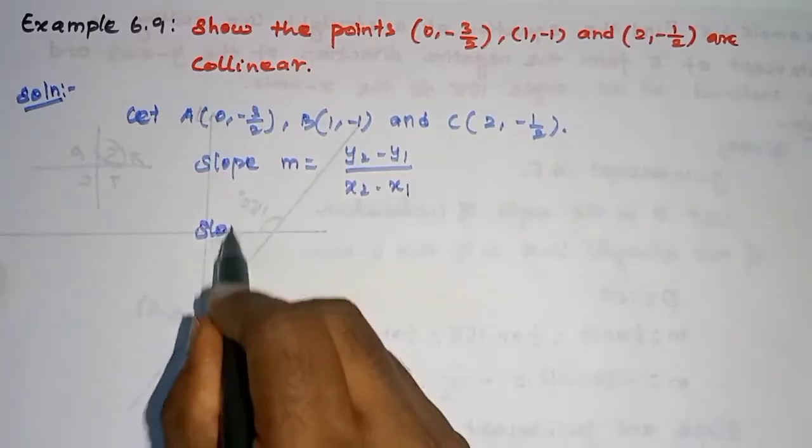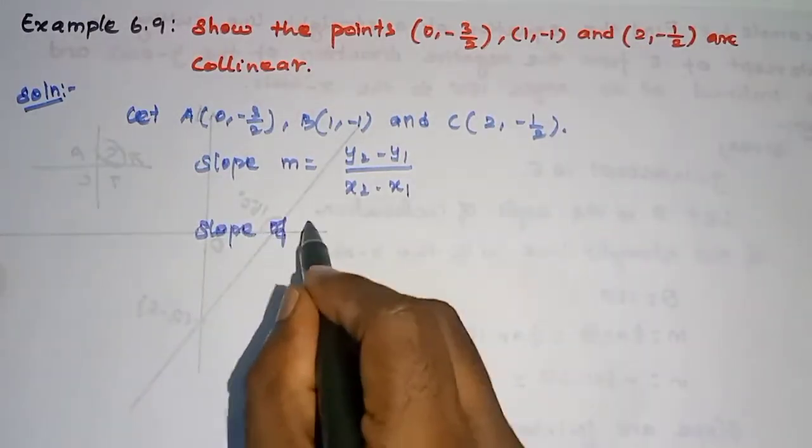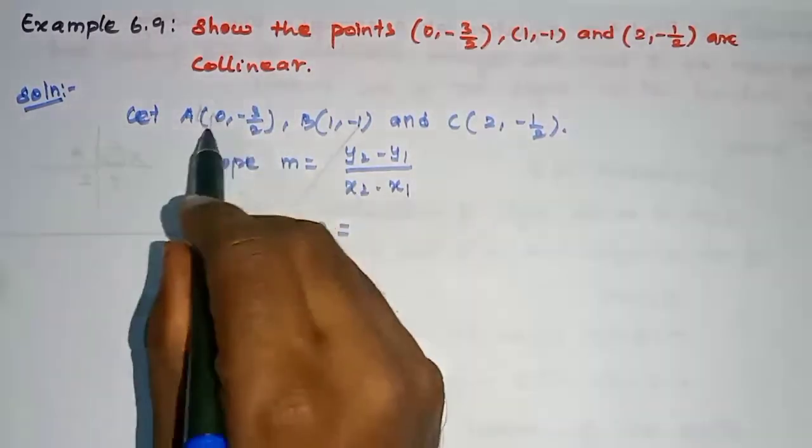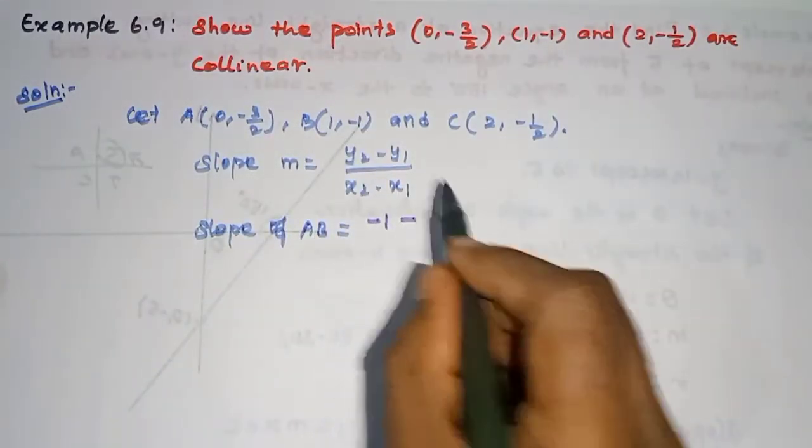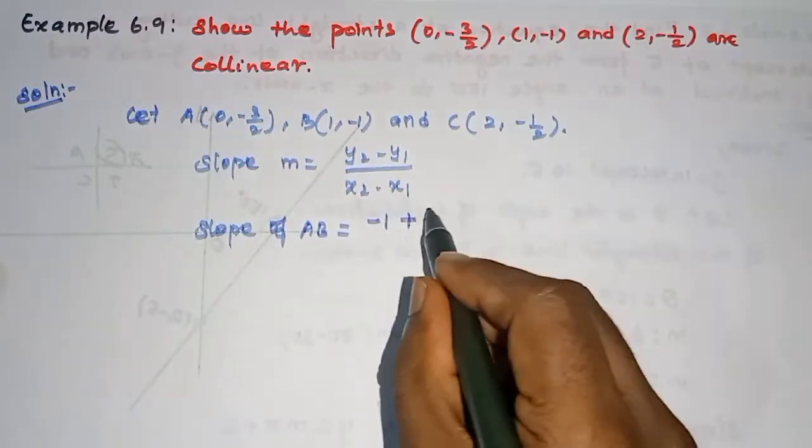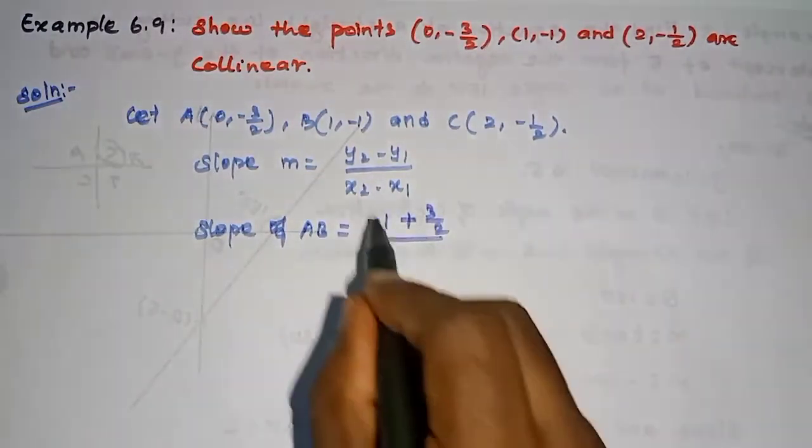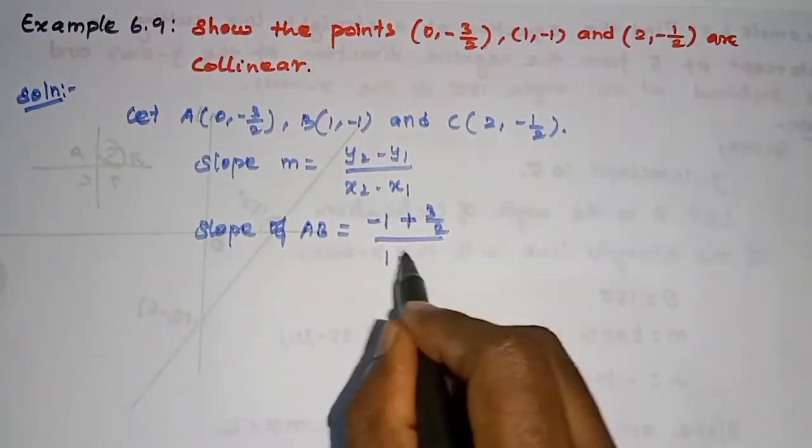Now, we will find the slope of AB. We will choose x1, y1, x2, y2. Then, y2 minus minus y1, I will choose plus 3 by 2. This is divided by x2 is 1 minus 0.